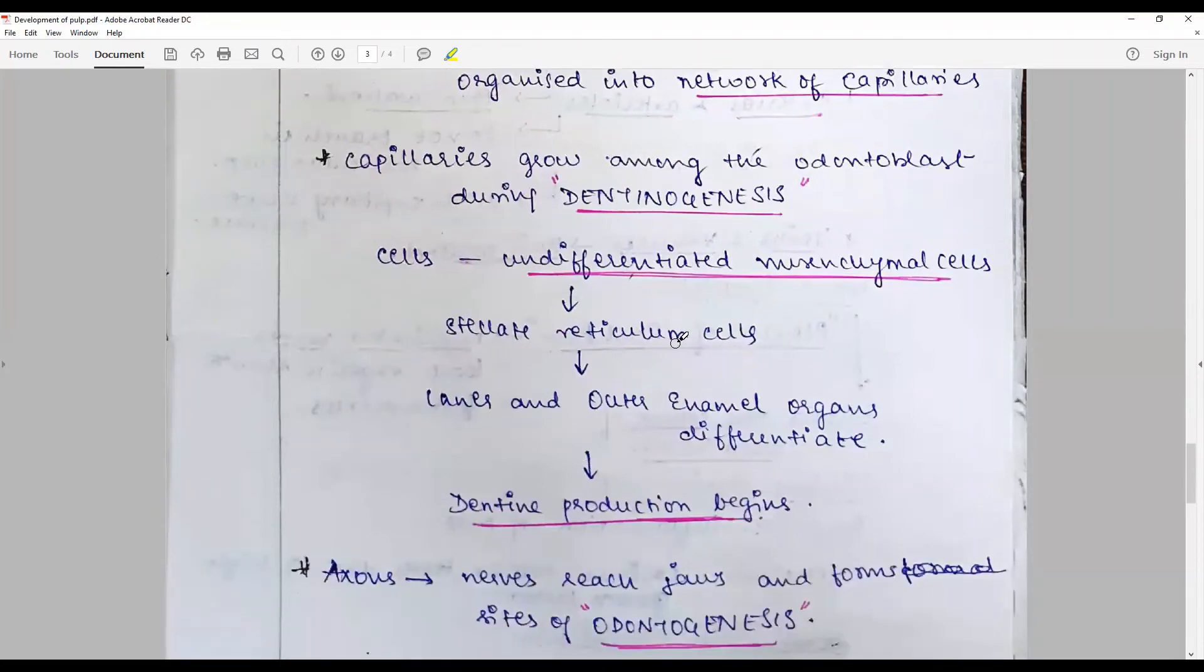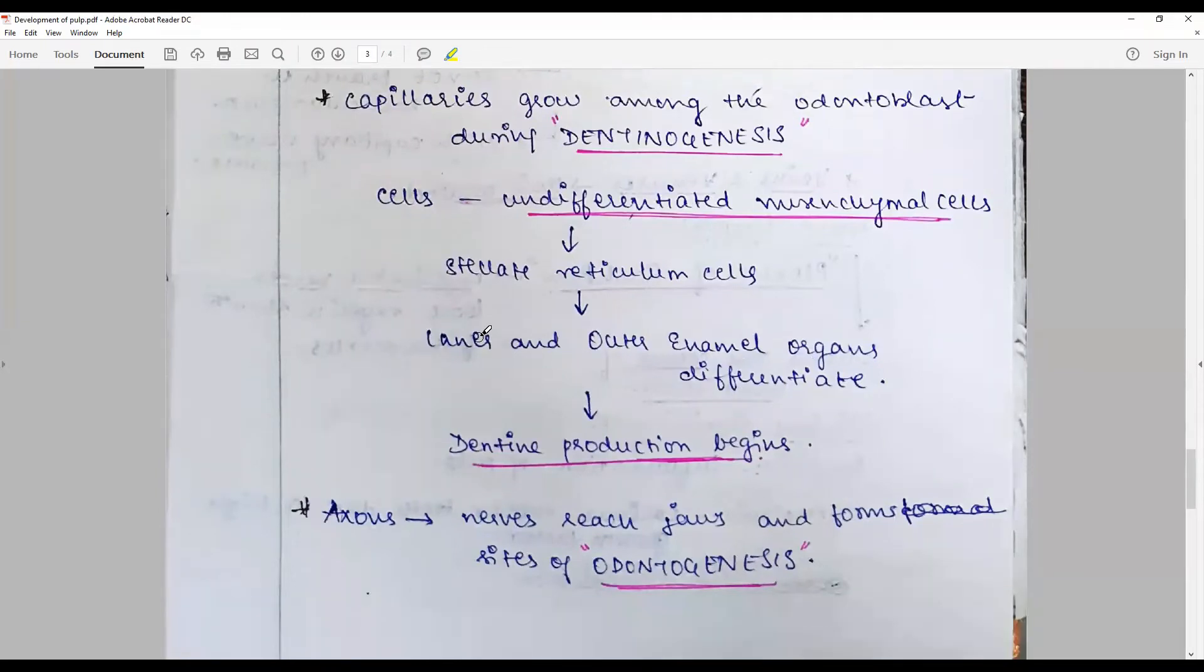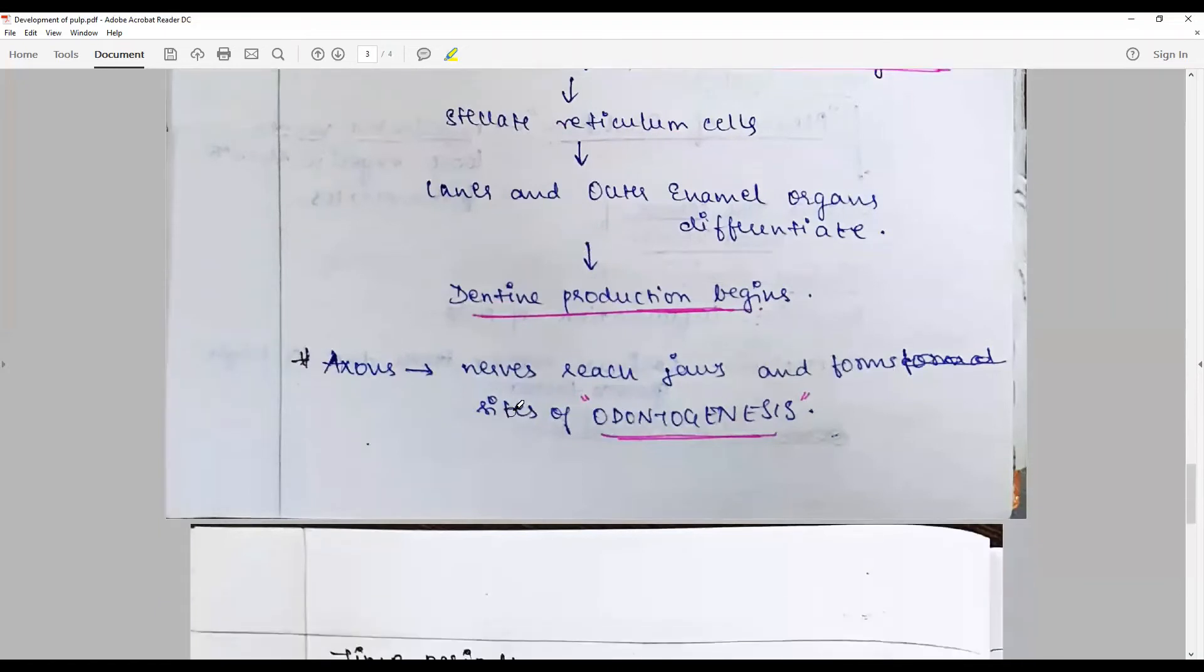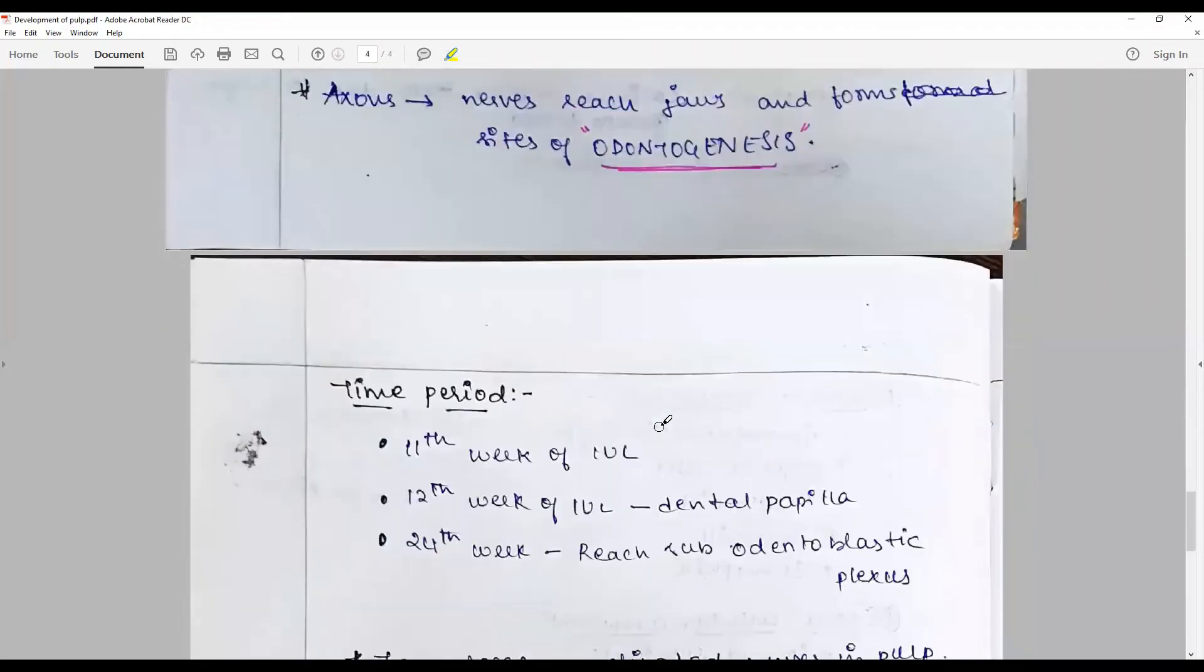Under the organizing influence, the outer enamel organ differentiates and thereby stimulates dentin production. The axons of the nerves spread through sites of odontogenesis.